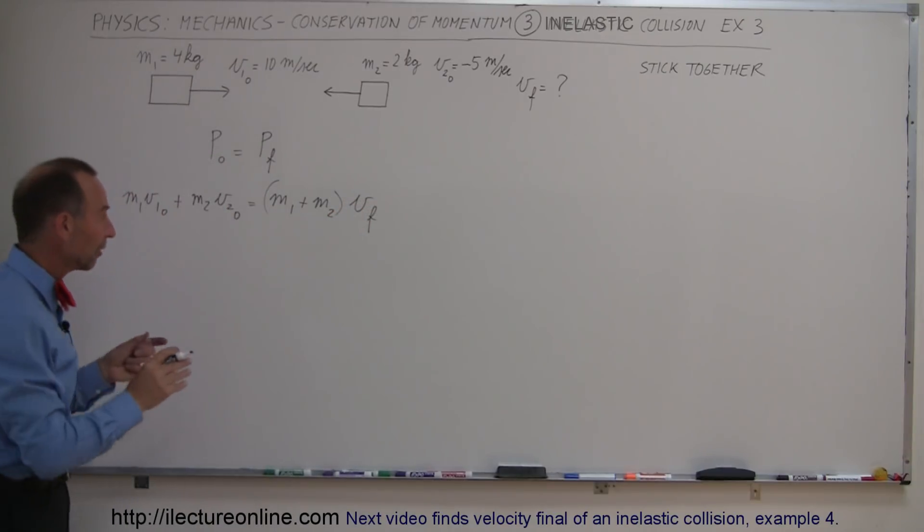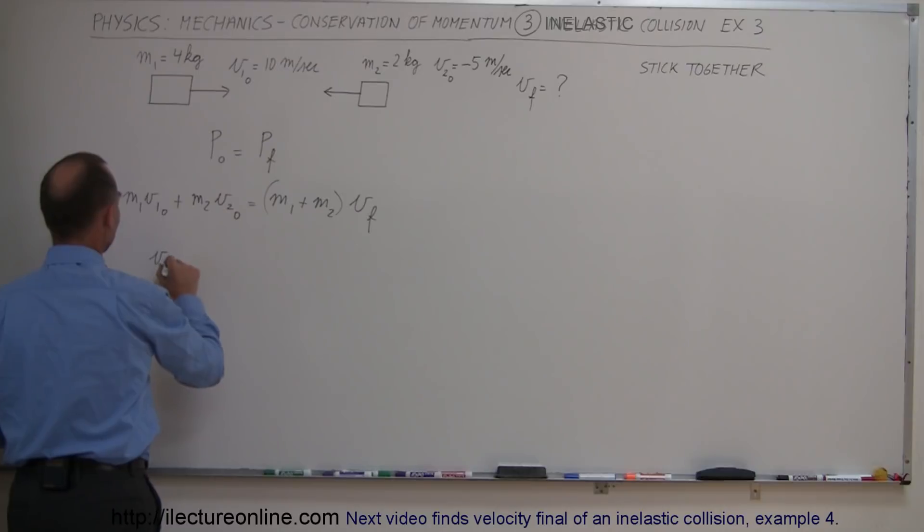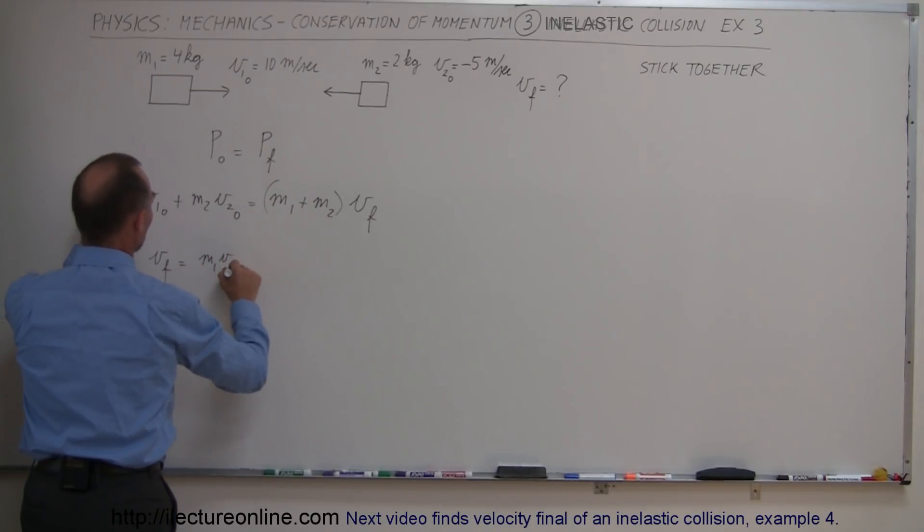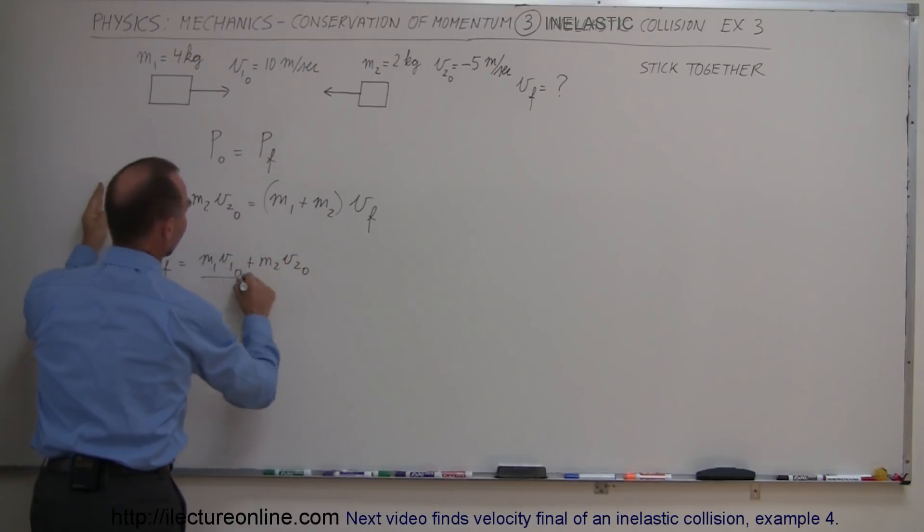So again, solving for V final, we can write V final is equal to the left side of the equation, which is M1 V1 initial plus M2 V2 initial divided by the coefficient of V final, which is M1 plus M2.